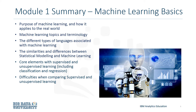In the first module, you gained a general idea of the purpose of machine learning and how it applies to the real world, including machine learning topics and terminology, the different types of languages that are associated with machine learning, and the similarities and differences between statistical modeling and machine learning, for instance, differences in naming conventions, as well as the differences between supervised and unsupervised learning.